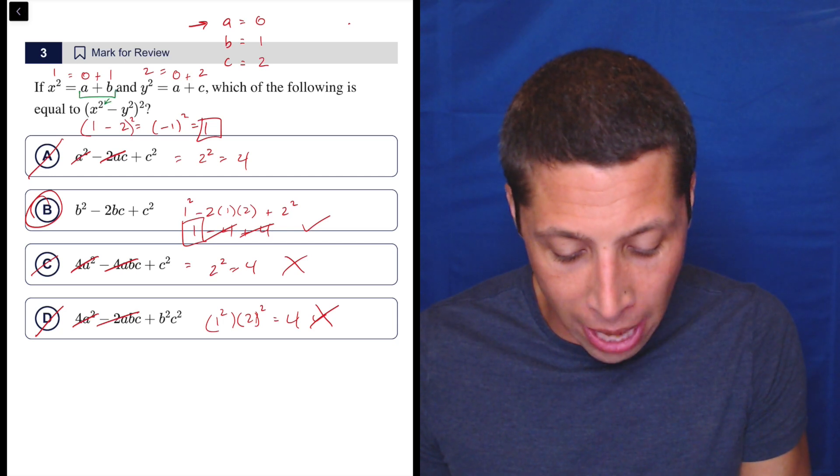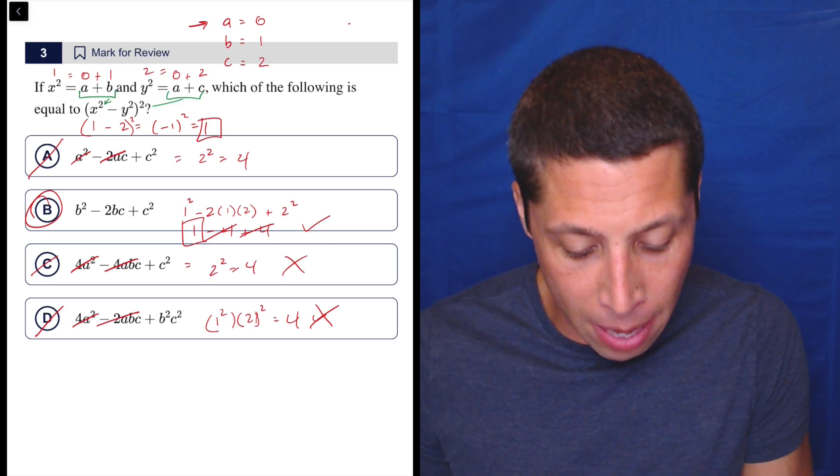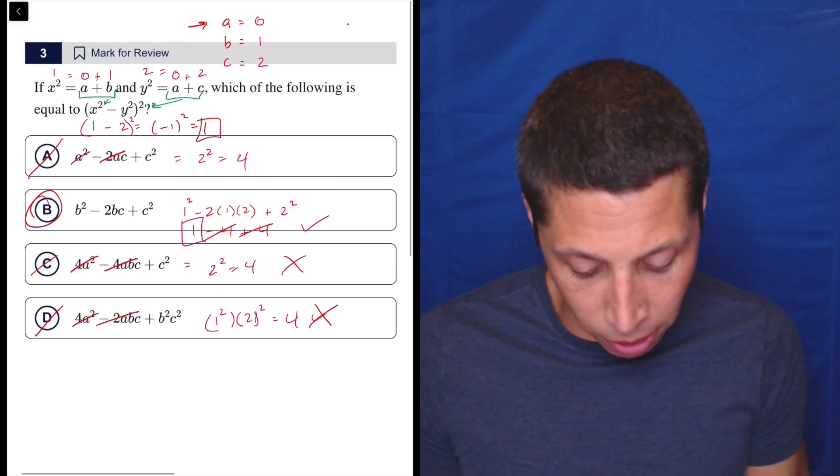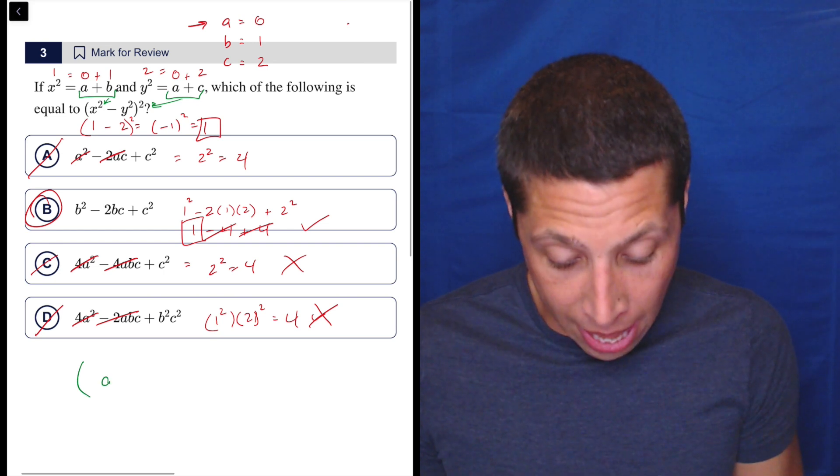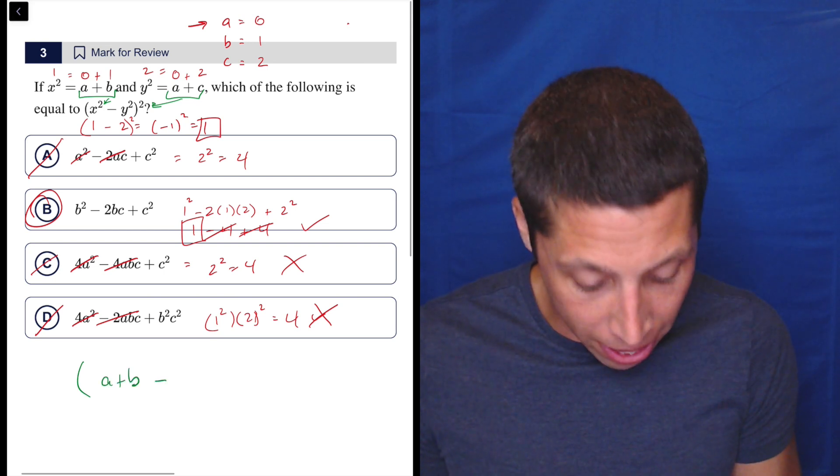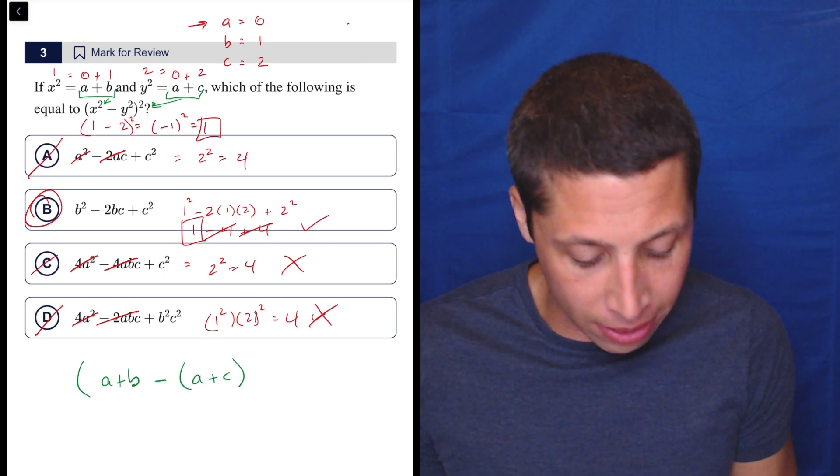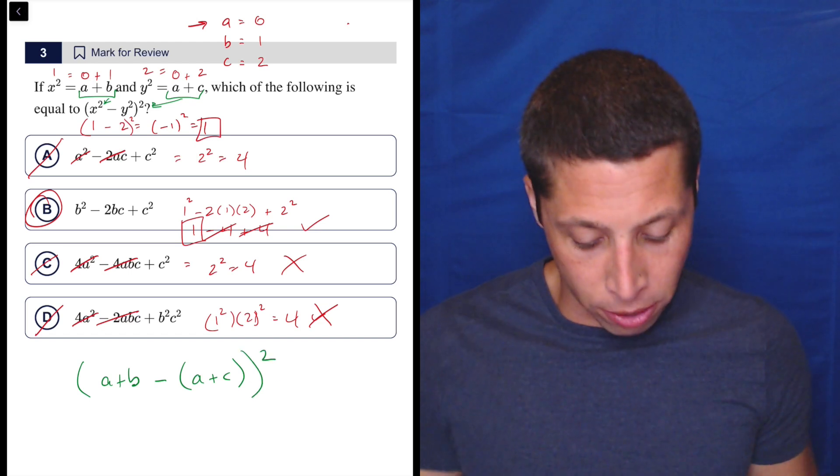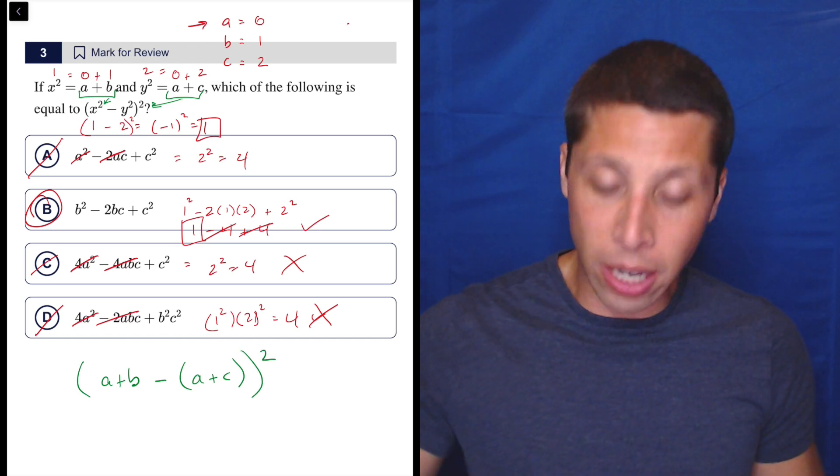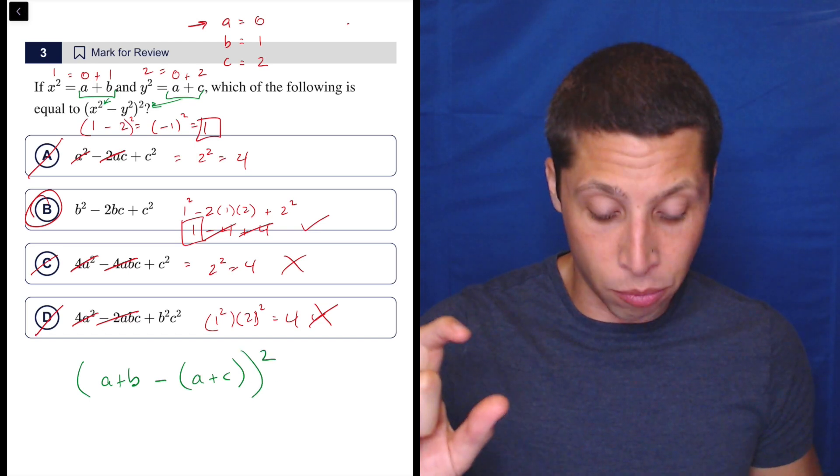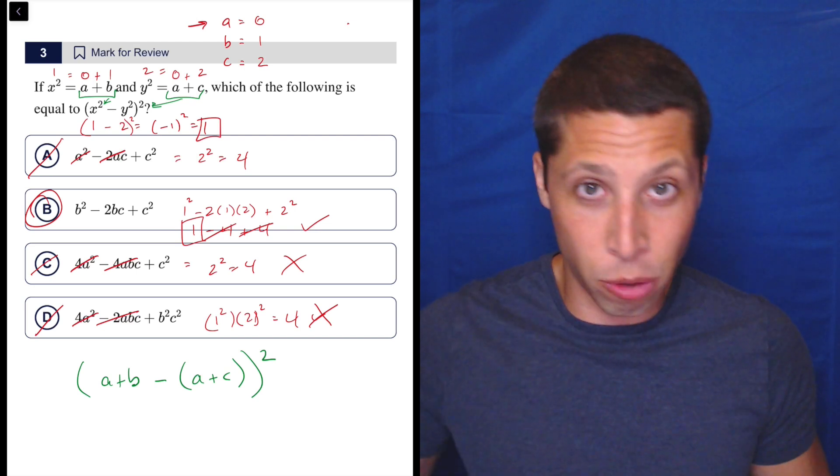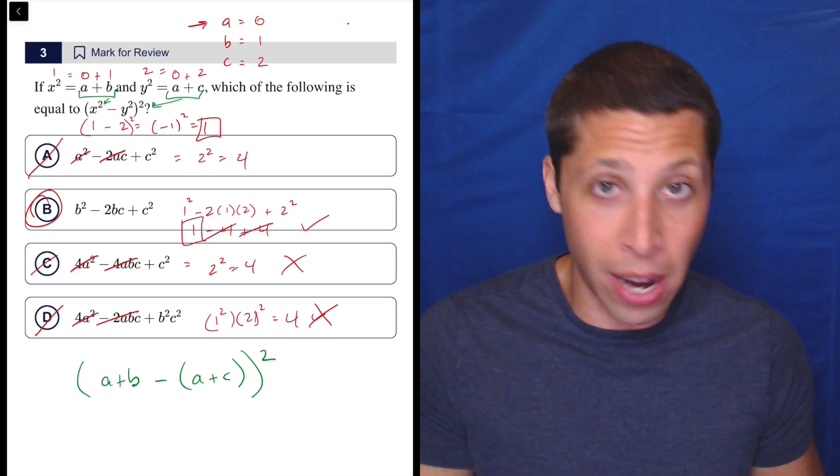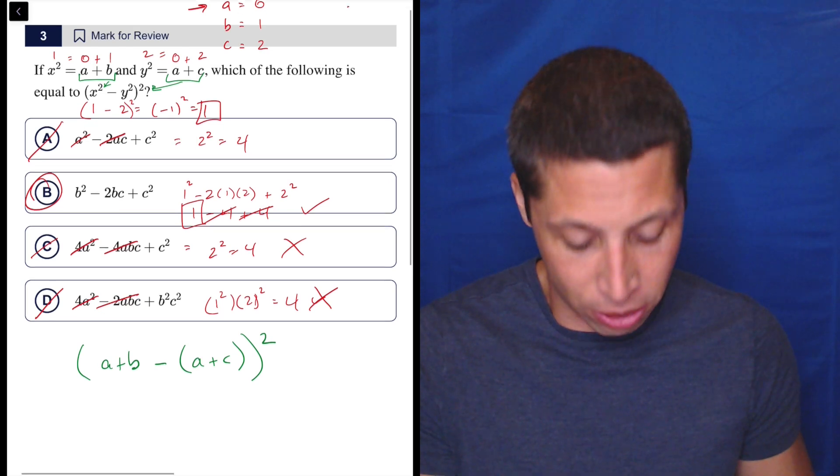Let's look at the algebra just because I do think in this case it's worth looking at. We're going to do a basic substitution. We're going to put A plus B in for the X squared and A plus C for the Y squared. So we're going to have A plus B minus, and here we got to be careful, A plus C, and that's all squared. So notice there's no squaring of the A plus B within the thing because remember A plus B is X squared. So we are substituting in for X squared, not for X. For X squared, we're not going to deal with the radicals. We don't need to.